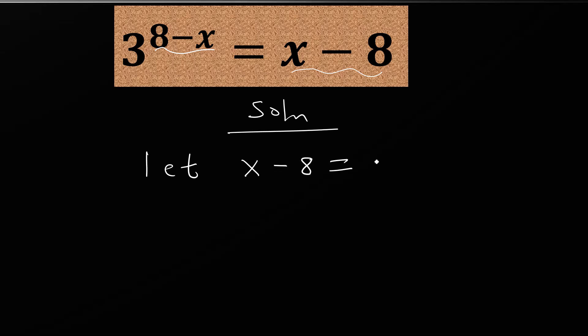Now let's do a substitution. We have 3 to the power 8 minus x. Since we are letting x minus 8 equal t, let's solve for x and do substitution in order to work in terms of one variable. So we have x equals 8 plus t.